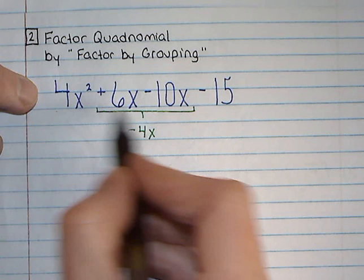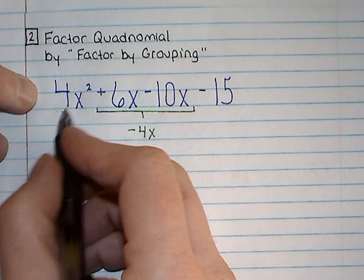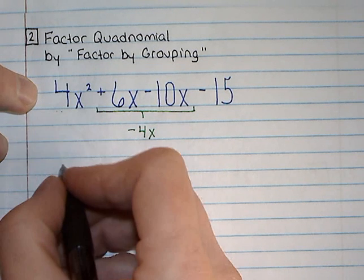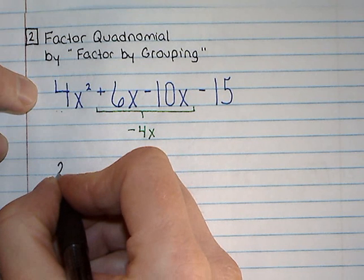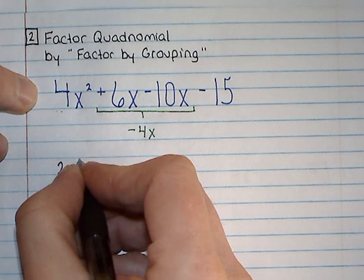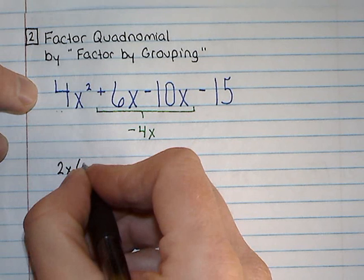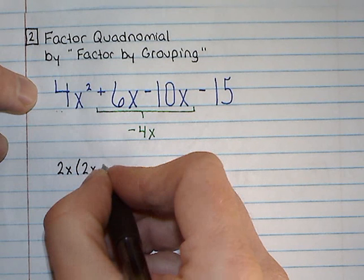So I'm going to look at my first two terms. What is in common with 4x squared plus 6x? Well, I have a 2x in common. So if I factor that out, I'm left with a 2x plus 3.